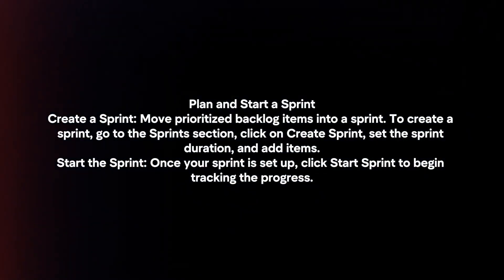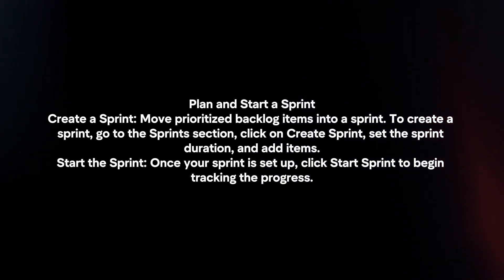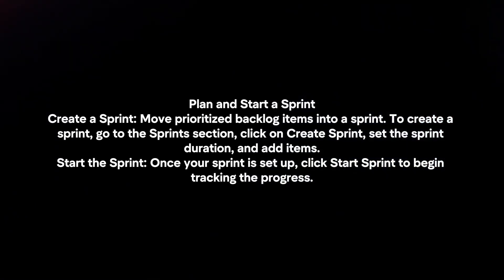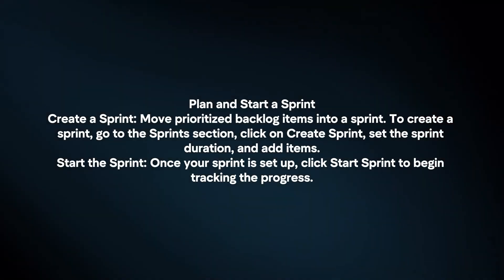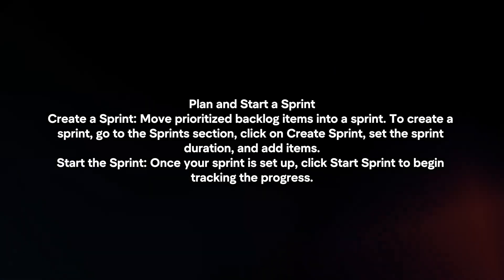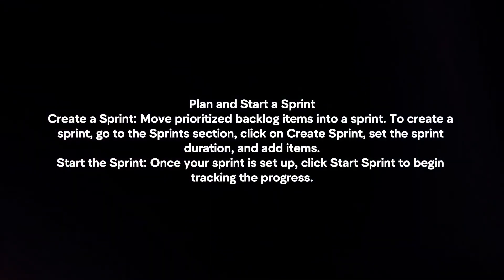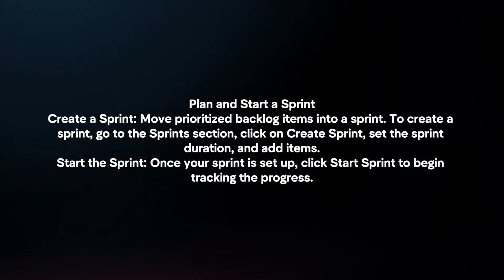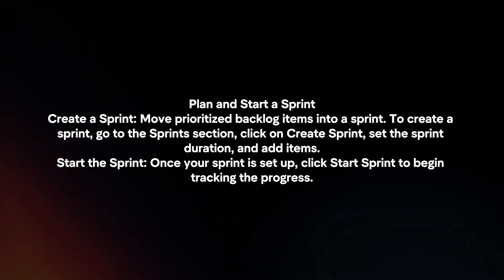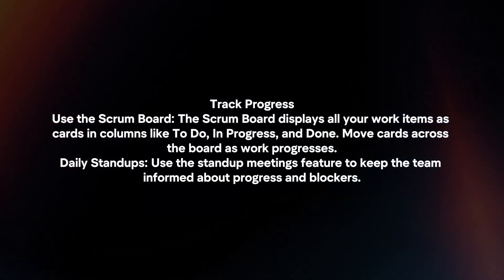Plan and start a sprint. Move prioritized backlog items into a sprint. To create a sprint, go to the Sprint section, click on Create Sprint, set the sprint duration, and add items. Once your sprint is set up, click Start Sprint to begin tracking the progress.